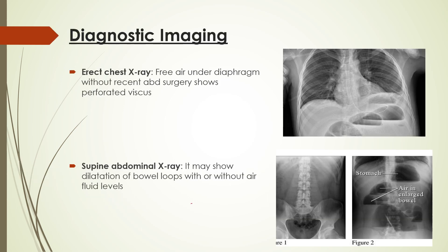To help us diagnose a case properly, we know how helpful diagnostic imaging is. If we get an erect chest x-ray done, we can find free air under the diaphragm, as seen over here. Now, here we can see multiple air-fluid levels, which can be seen with the help of this line. This line separates the air from the fluid.